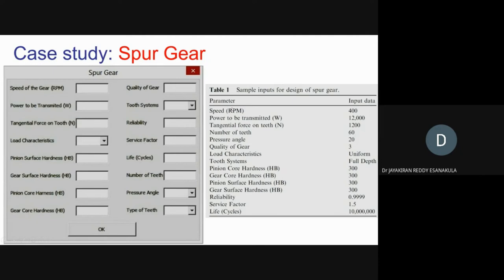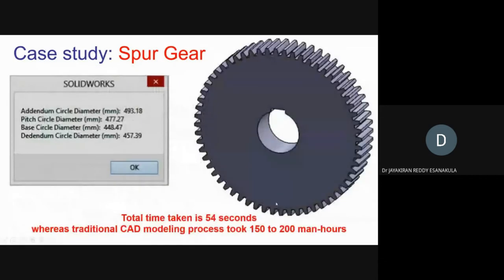Here are the inputs I gave for a particular gear to be designed: speed is 400 RPM, power to be transmitted is 12,000 watts, tangential force on the teeth is 1,200 newtons, along with other inputs. Based on these inputs, the software developed the CAD model. On the right you can see the spur gear CAD model. On the left side you can see the dimensions of the spur gear — addendum, dedendum, pitch circle, base circle. At the bottom, the total time taken is just 54 seconds.